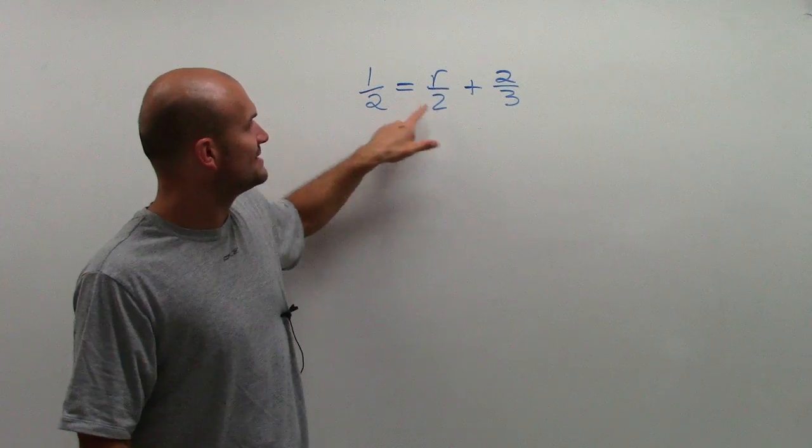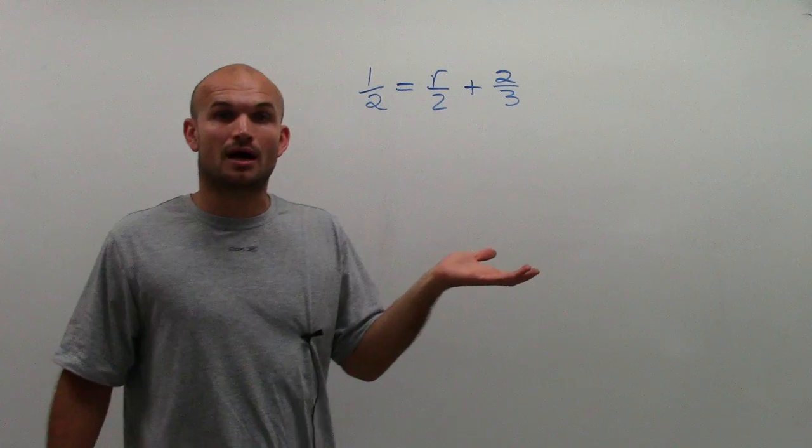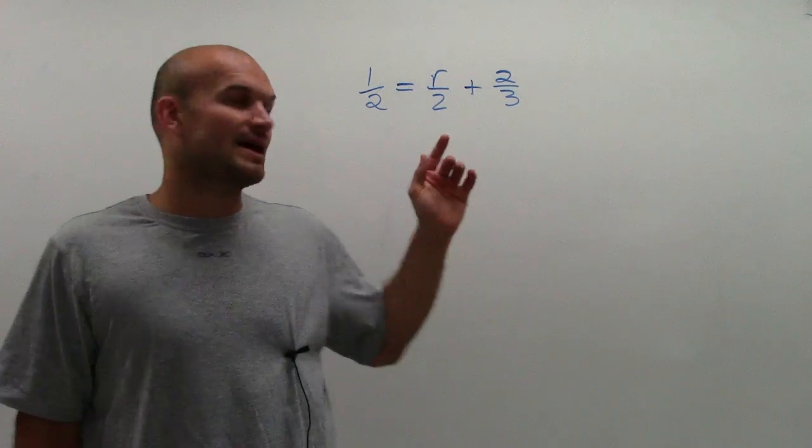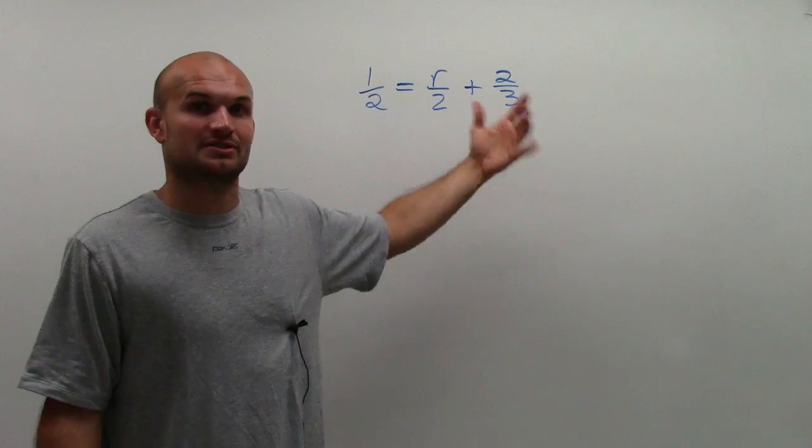since my denominators are both going to divide into that number, then what's going to happen is I'm going to get rid of the fractions.